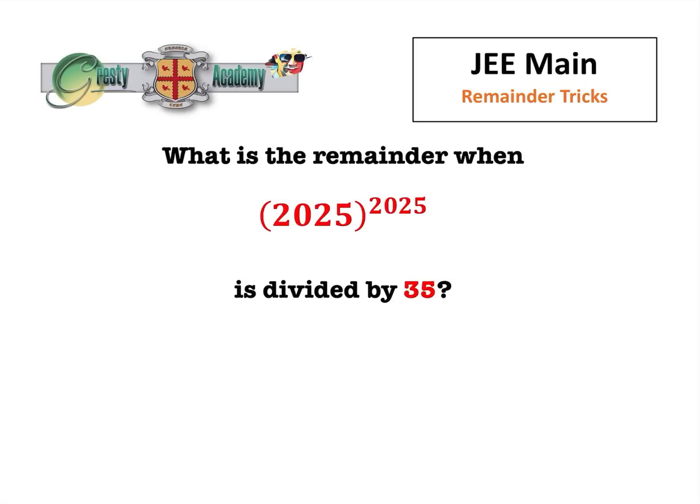This is a really interesting question for harder college entrance exams or maths olympiads. We're asked to find what the remainder is when 2025 to the power of 2025 is divided by 35. Now I'm going to do three methods, and maybe in the comments you can vote on which method you prefer.